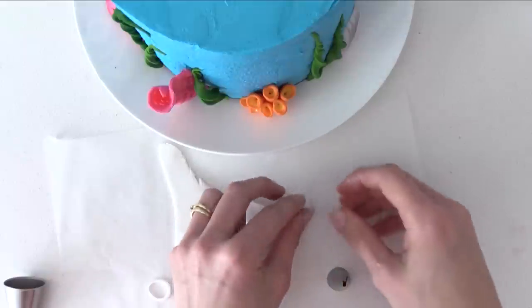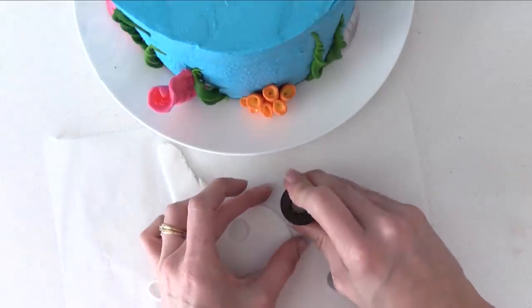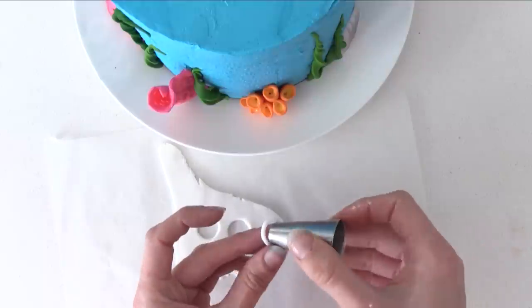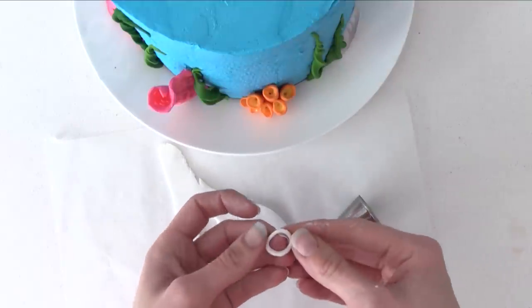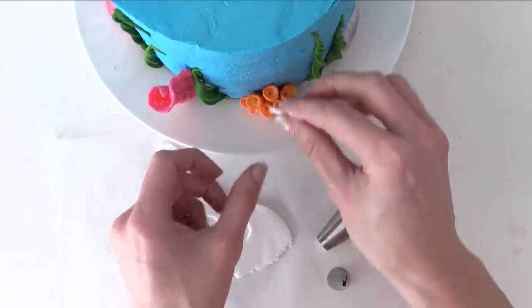For our bubbles, cut a circle of white fondant and cut a smaller circle out from the middle so you're left with a little ring. Gently push that onto the side of the cake.